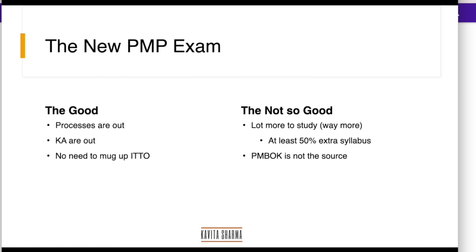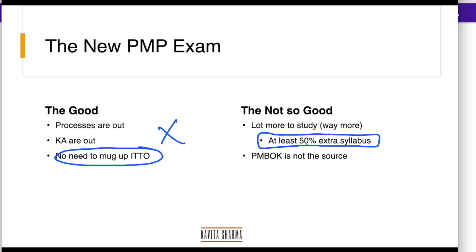The good thing is you don't have to memorize ITTOs. A lot of people used to ask about how many processes, how many knowledge areas, how many process groups — all of that is gone. However, you would have more to study; at least 50% the syllabus is huge. You have to study a lot and a lot of new tools and techniques have come in.